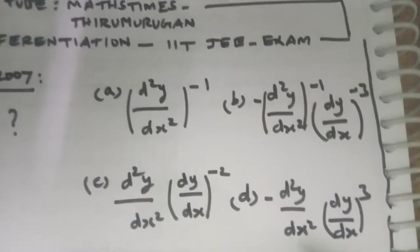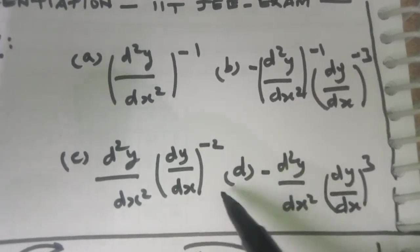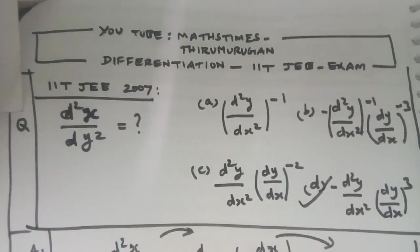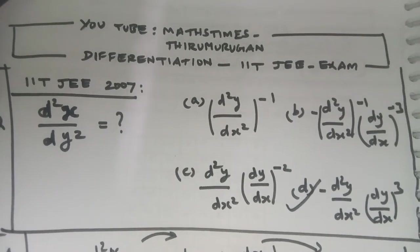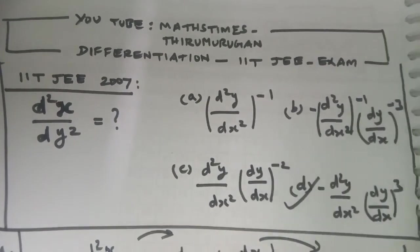Here you see the option, we get answer D. This is the way to find differentiation of what is given. Thank you.